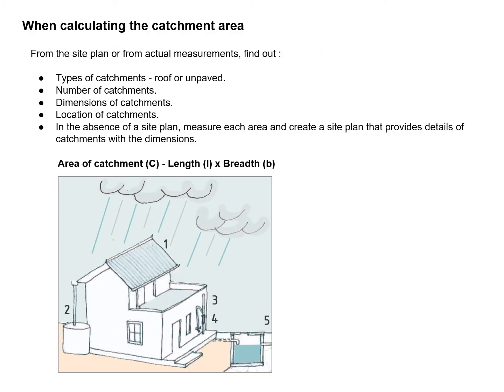When we calculate the catchment area, we need to know the type of catchment — whether it is a roof or unpaved. We have to see the number of catchments, take their dimensions, and locate them in the drawing. In the absence of a site plan or roof plan, we have to measure each area and create a site plan that provides details of catchments with dimensions. To find the area, we calculate length by width.